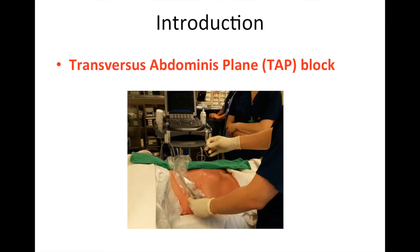TAP block is widely used to provide analgesia to the anterior lateral abdominal wall. Recent literature suggests that this block may be used to help decrease postoperative pain at laparotomy for gynecologic surgery and may help with earlier discharge. Knowledge of this technique may assist the gynecologist and anesthesiologist to provide this option for a greater number of patients.